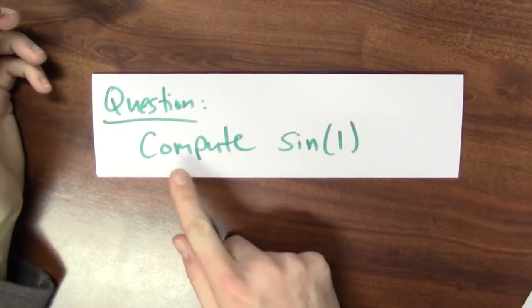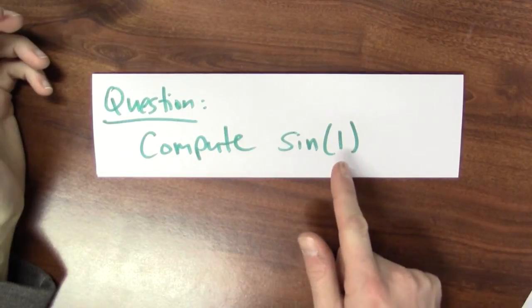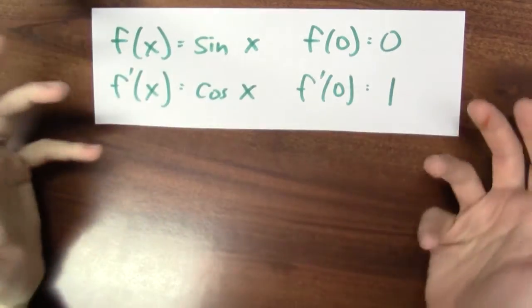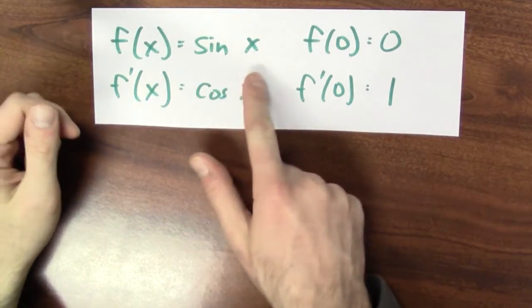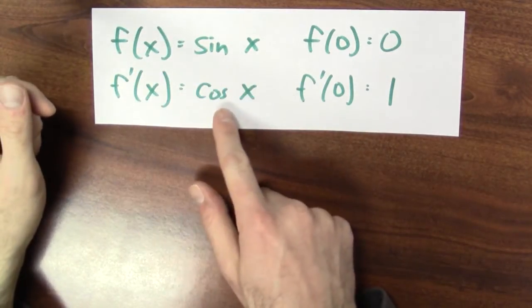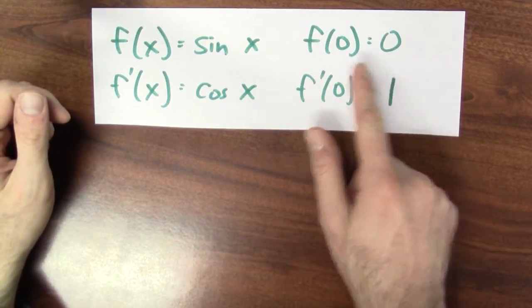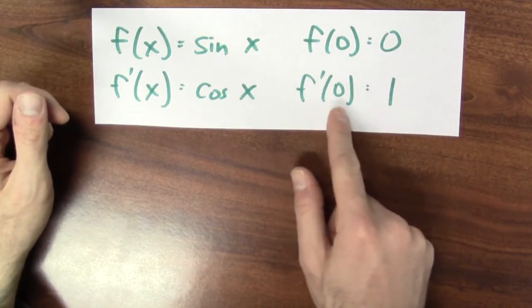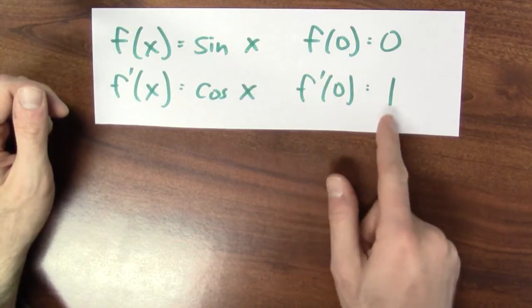So that's a good question. How do we compute sine of 1 radian? One way is to use a little bit of calculus. What does calculus tell us? Let's set f(x) equals sine x. Then the derivative of f is cosine x. The value of f at 0 is 0, sine 0 is 0, and the value of the derivative at 0 is 1, cosine 0 is 1.